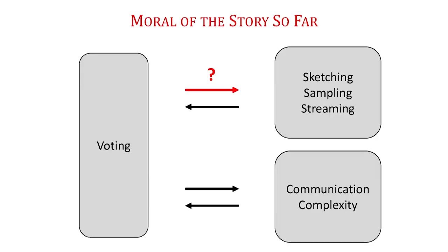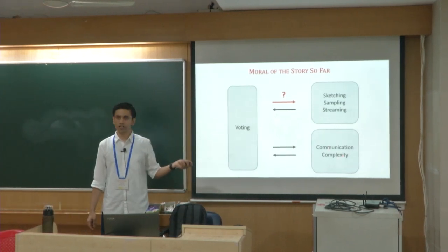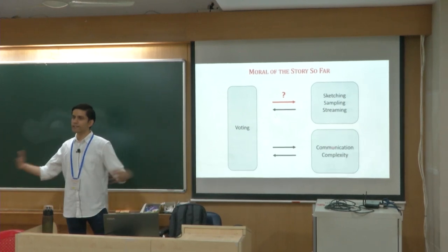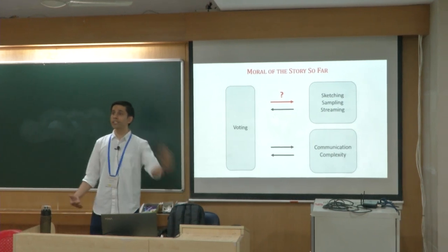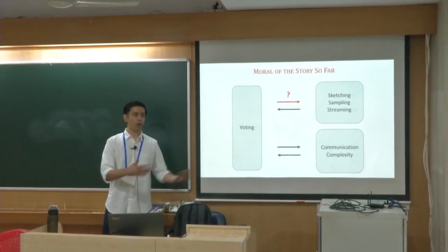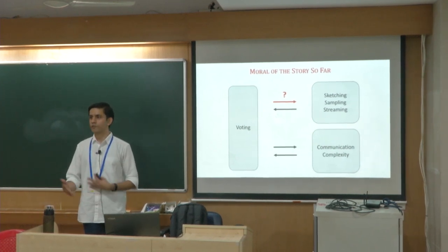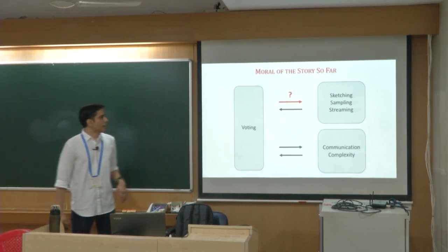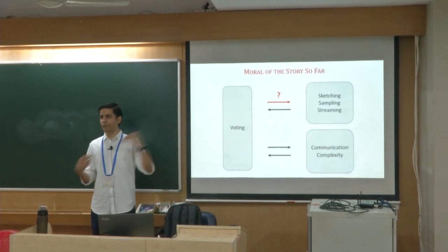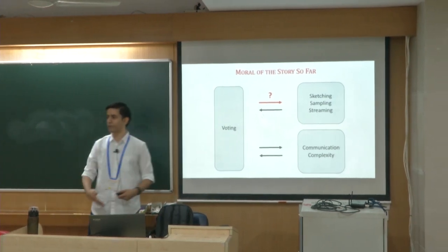The key moral of the story is a nice connection between the voting literature, the communication complexity literature, and the streaming algorithms literature. With communication complexity it is a two-directional bridge: we utilized existing results, but deriving our voting results also required deriving new results — introducing fixed-size set disjointness and the substantial-intersection promise. With streaming algorithms, so far we have only used results to derive voting rules, and it remains to be seen whether voting rules can yield new streaming algorithms.